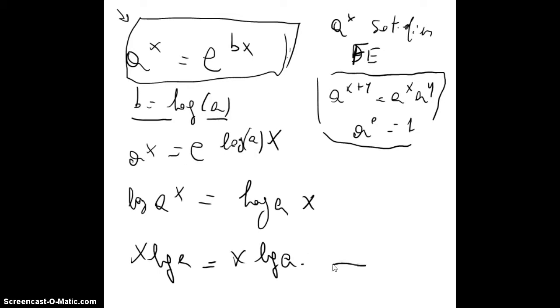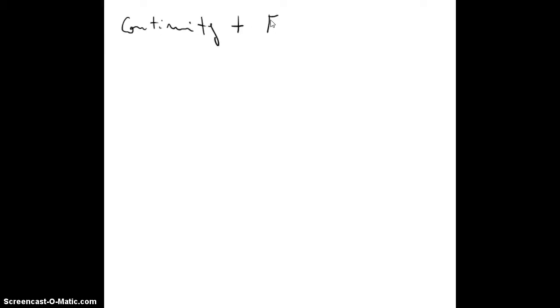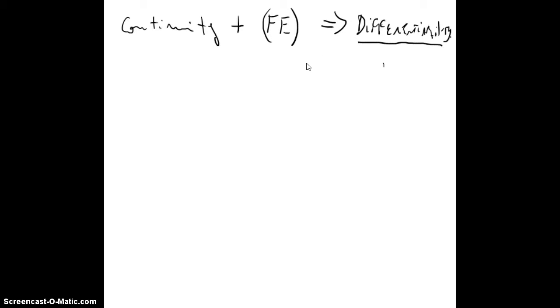One can write that these are the same function. So if one has this satisfying the functional equation, one would arrive that it can also be expressed as e^(bx). Now we know that if we have continuity plus the functional equation, then we will have differentiability. And this will happen very often in the cases of the different semigroup linear operators.